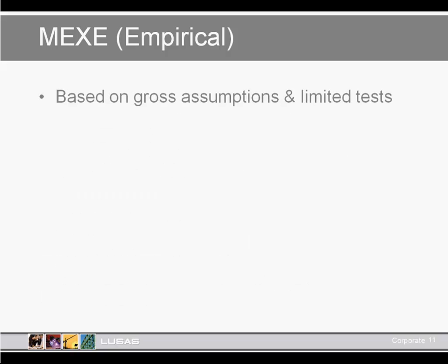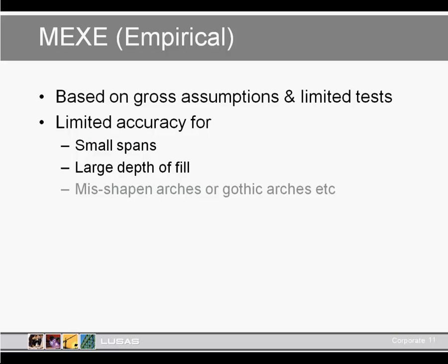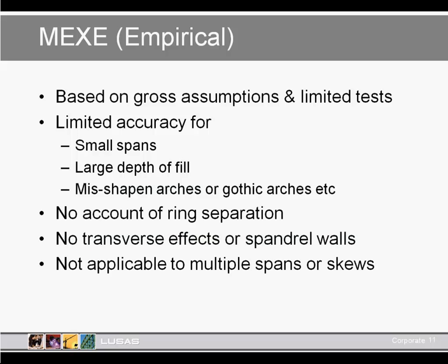MEXE has limited accuracy for small spans where the arch depth to fill over the crown is greater than the barrel thickness, for multi-span arches and gothic arches, and features like spandrel walls, wing walls, fills, and parapets are generally not included. But it is probably the most widely used method currently in the UK.